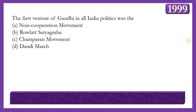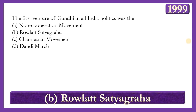Next question: The first venture of Gandhi in all-India politics was which of the following? Options: Non-Cooperation Movement, Rowlatt Act Satyagraha, Champaran Movement, or Dandi March. The answer is option B — Rowlatt Satyagraha. While Gandhi began his experiments with Satyagraha in Champaran (1917), Ahmedabad (1918), and Kheda (1918), these were localized. The first all-India level movement he launched was the Satyagraha against the Rowlatt Act in March 1919.